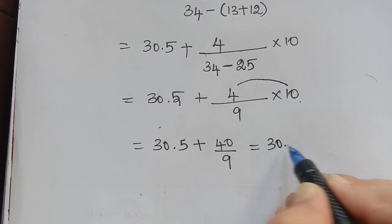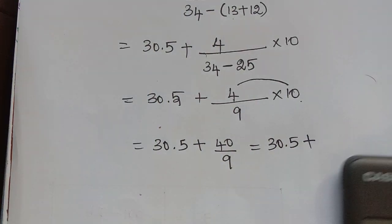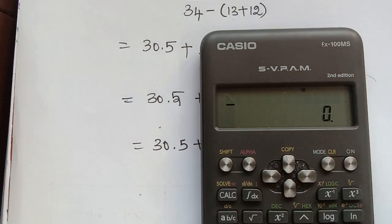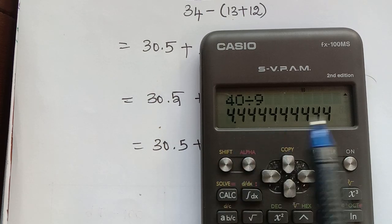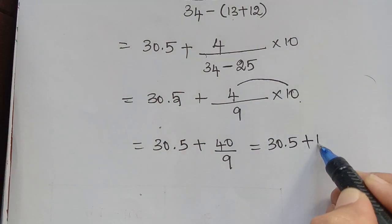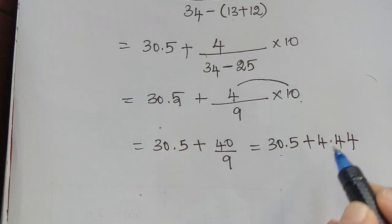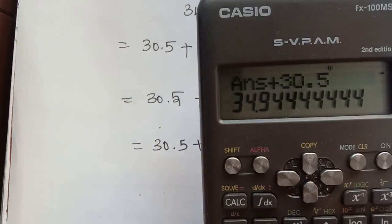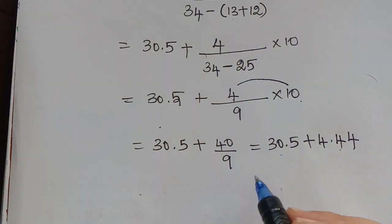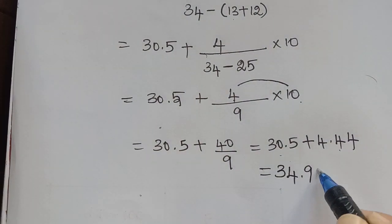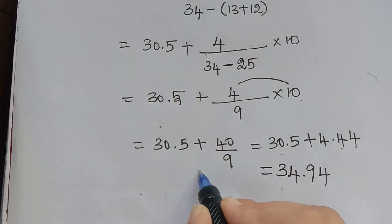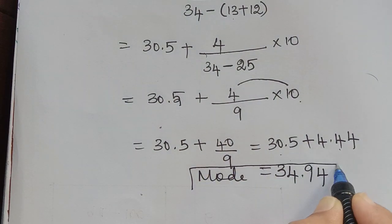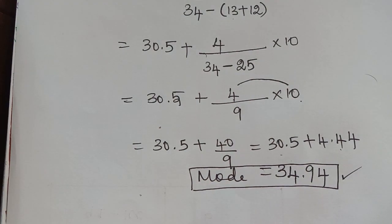Continuing the calculation: 4 × 10 = 40, so we have 30.5 + 40/9. Dividing 40 by 9 gives approximately 4.44. Adding: 30.5 + 4.44 = 34.94. Therefore, the value of mode is equal to 34.94.